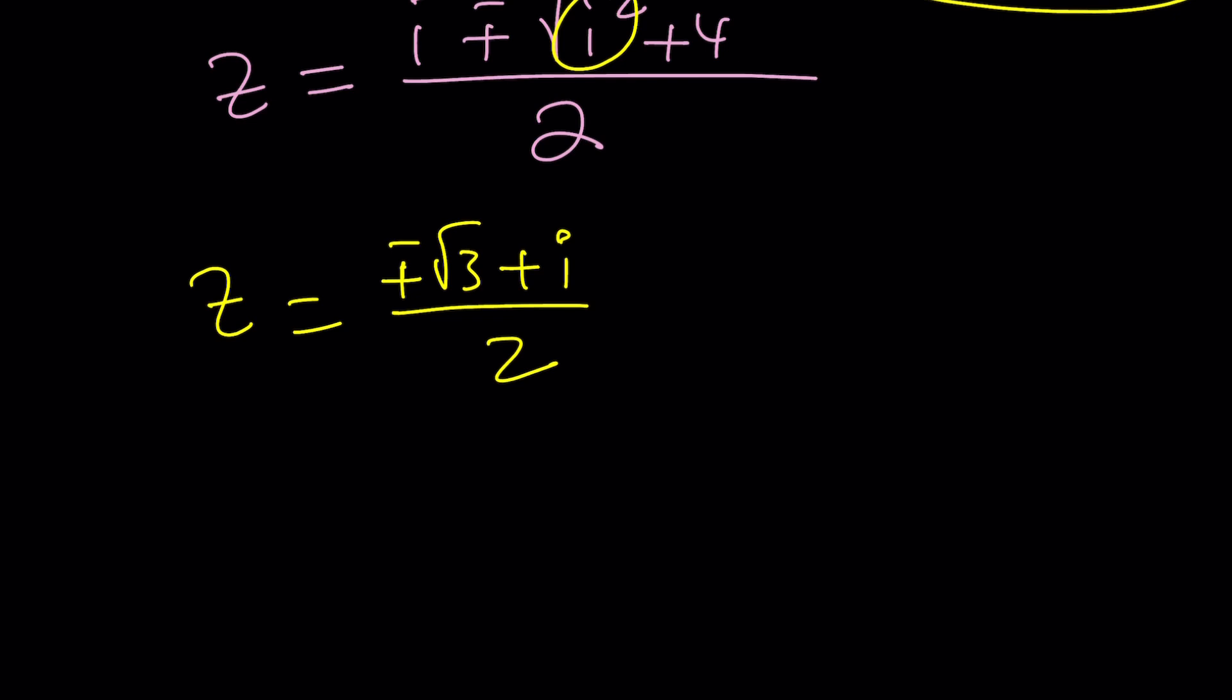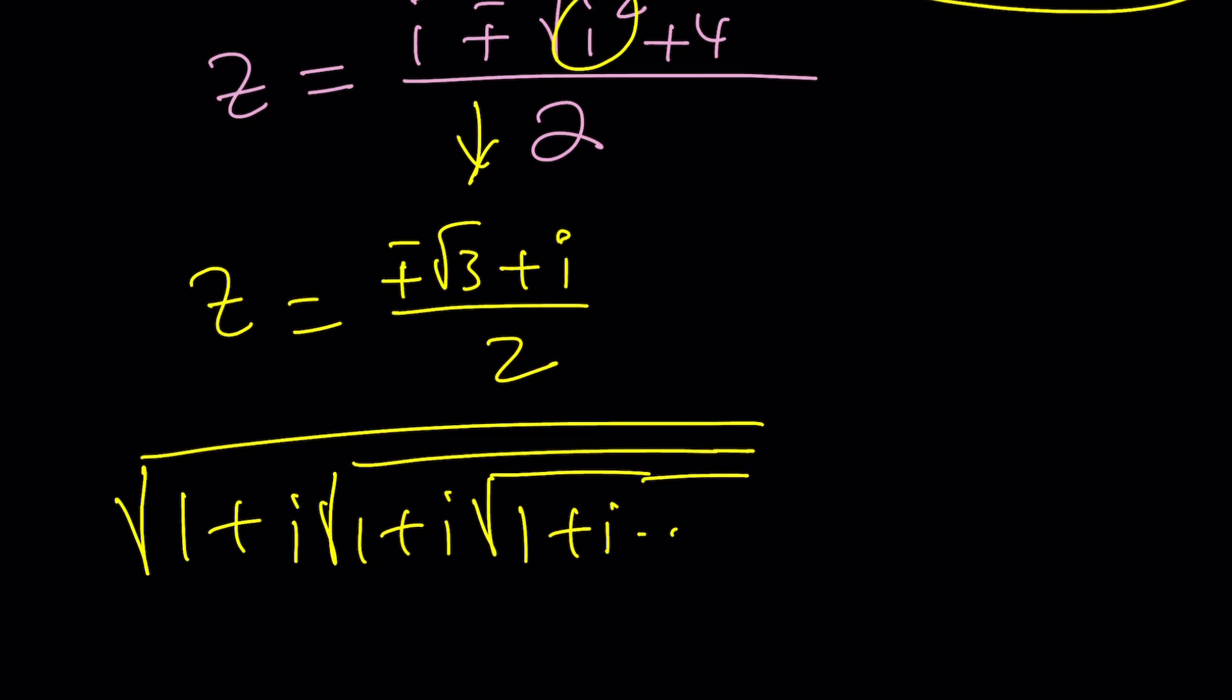But guess what? Can we have two different solutions for this? Because it's not like solving an equation. Well, it turns out to be, but we have a single expression. So here is another million dollar question for you to explore. Can this be two different things at the same time? And if I had to choose, which one would I choose? Obviously, I would go with the positive solution and say that, okay, I think this converges to root 3 plus i divided by 2. And guess what?